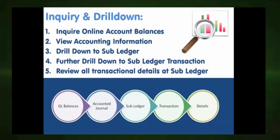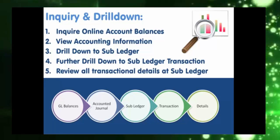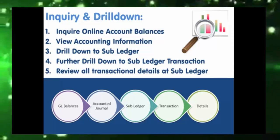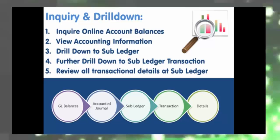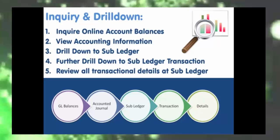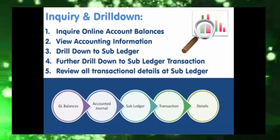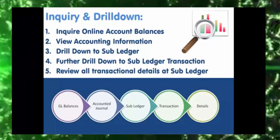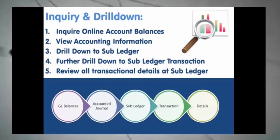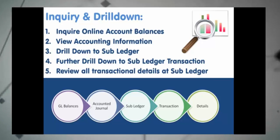The basic steps for drill down are: 1. Inquire online account balances or summary balances. 2. View accounting information — you can drill down to a journal from an account balance. 3. Drill down to sub-ledger — you can drill down from a journal to the originating sub-ledger. 4 and 5. Further drill down to sub-ledger transaction — you can see the transaction in the sub-ledger and review all transactional details available at the sub-ledger from the general ledger itself. This is the last topic in the basic GL overview chapter.